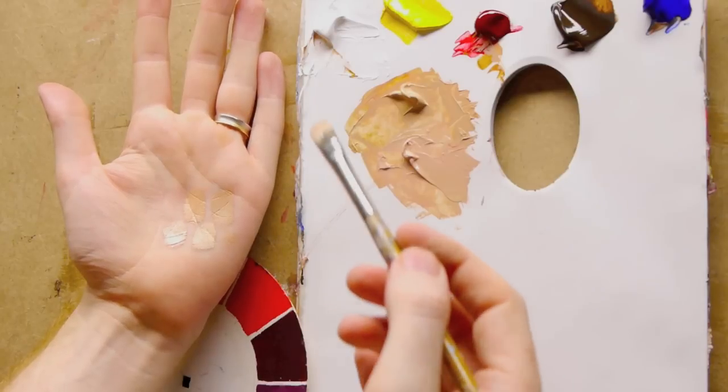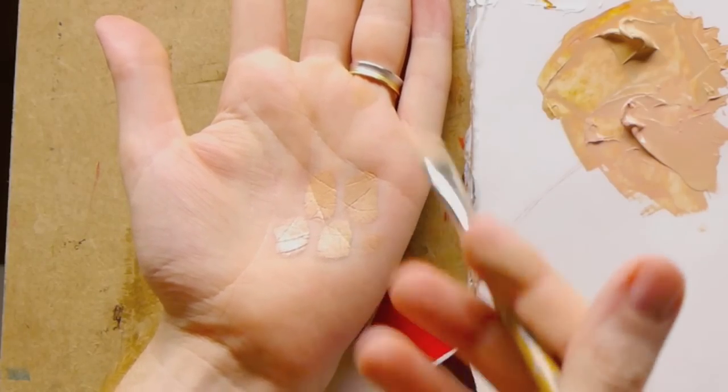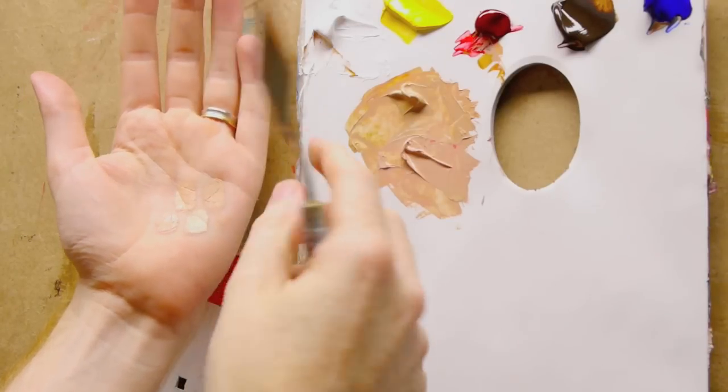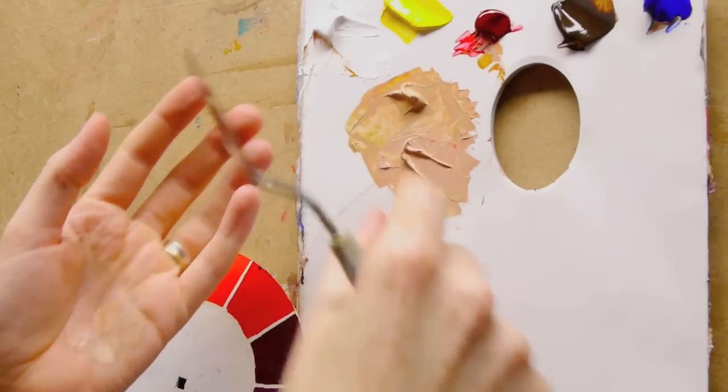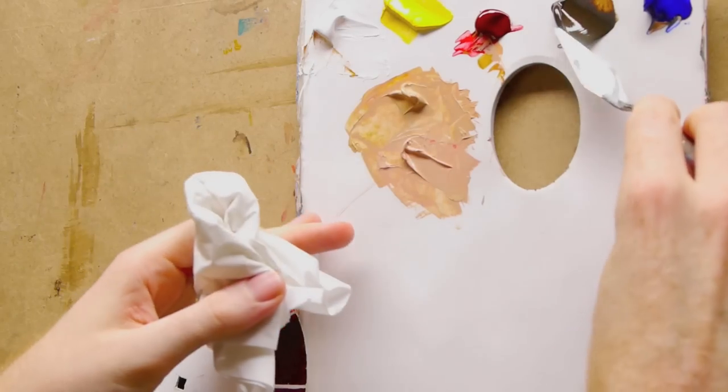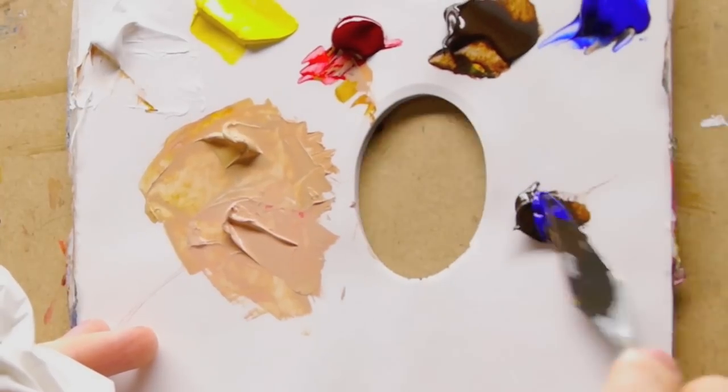So as all acrylics dry darker, this is a pretty good tone to start with when matching a skin tone. Often a common mistake in portrait painting matching skin tones is they're too high a chroma. What you can always do if you're using this palette is just mix a black between the burnt umber and the ultramarine blue.